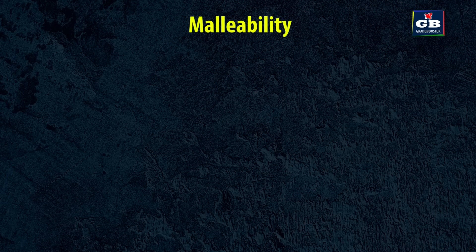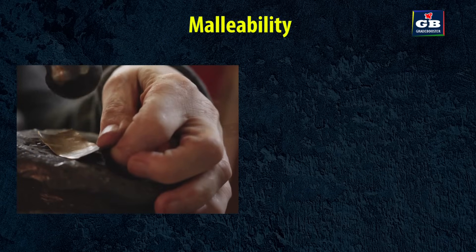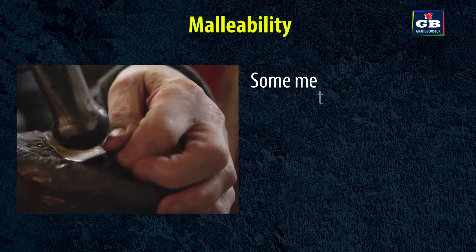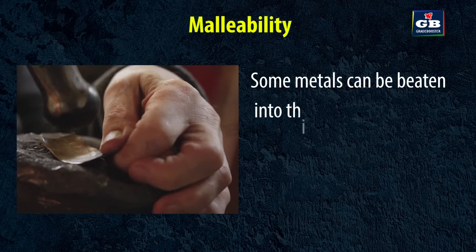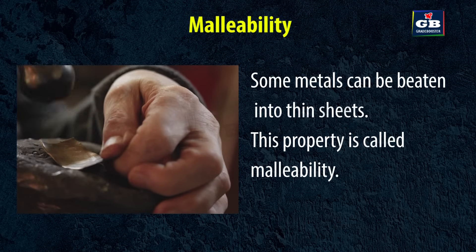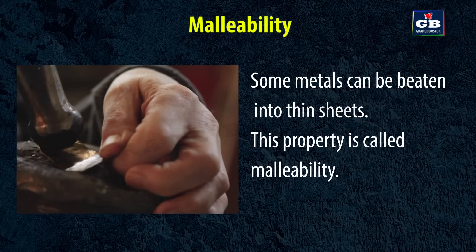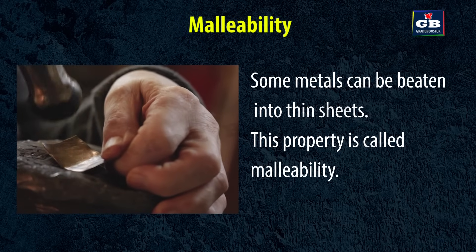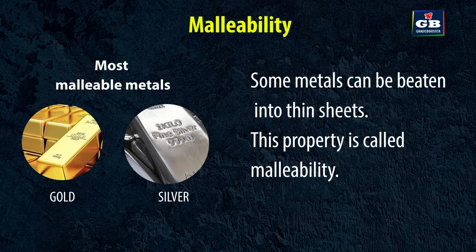Malleability: Some metals can be beaten into thin sheets. This property is called malleability. Gold and silver are the most malleable metals.